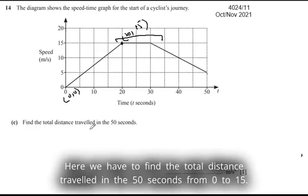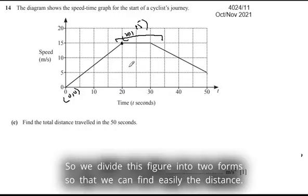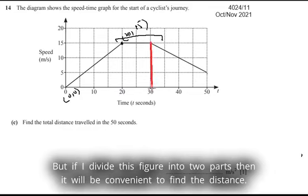Now move to part (c). We have to find the total distance traveled in the 50 seconds, from 0 to 50. In a speed-time graph, the area of the shape is the distance. We divide this figure into two parts so that we can find the distance easily.